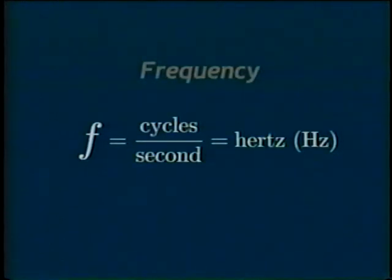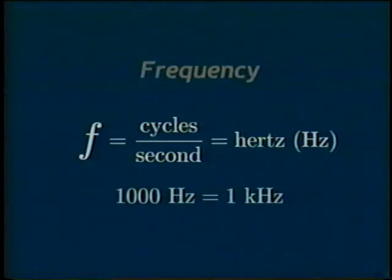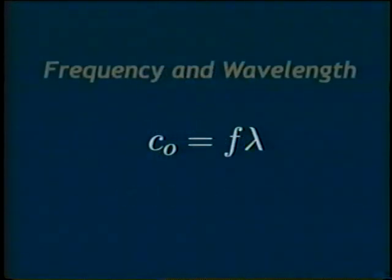Frequency is the number of wavelengths that have passed by a stationary point in one second's time. The unit of frequency used here is called hertz, abbreviated Hz. It's defined as the cycles of the wave per second. When the number of hertz exceeds 1,000, it's common to write the amount in units of kilohertz. For example, 1,000 hertz equals 1 kilohertz. Frequency is inversely proportional to wavelength.